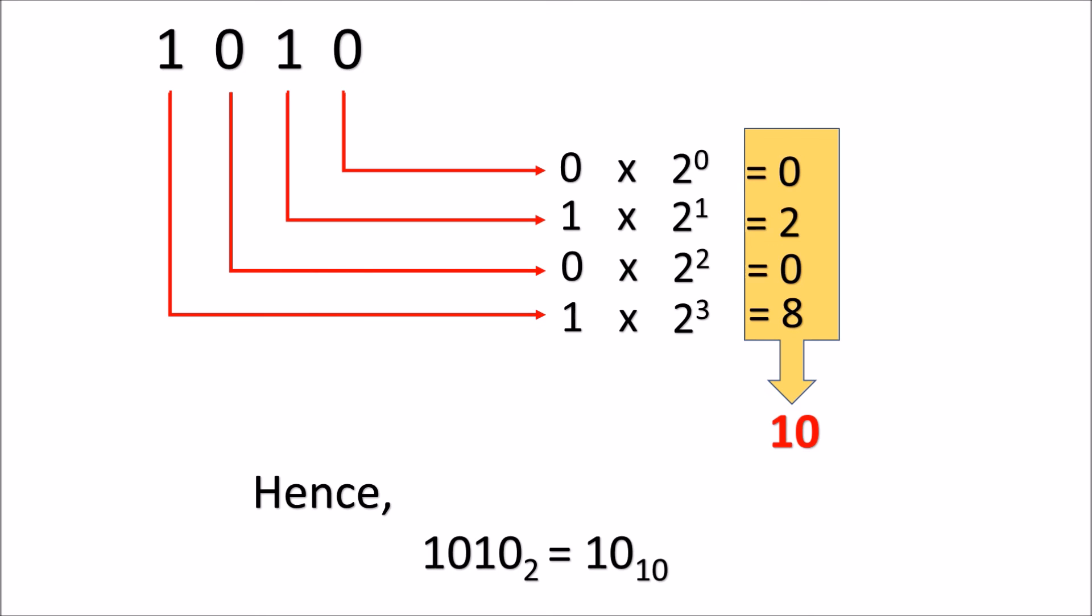The second value, the second number from the right, one time two to the first power. That is two. The third value, zero times two square. That is zero.